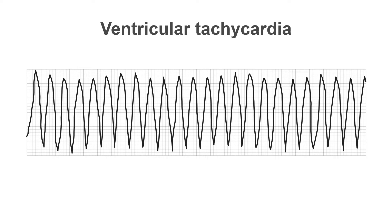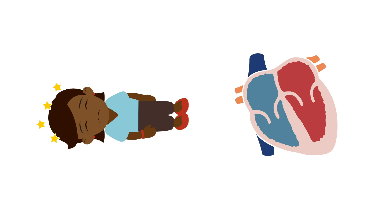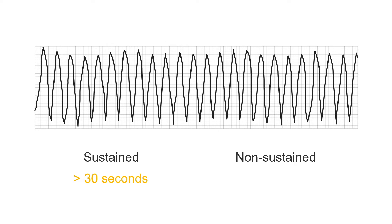Ventricular tachycardia — a regular wide complex tachycardia — is another relatively common arrhythmia on Holter monitoring, particularly as a brief incidental finding. However, it can be associated with serious symptoms such as syncope and may indicate a risk of sudden cardiac death. You must therefore always report any episodes of VT that you see, whether symptomatic or not. We often categorise episodes of VT as sustained or non-sustained: if an episode lasts more than 30 seconds it's sustained; less than 30 seconds, it's non-sustained.